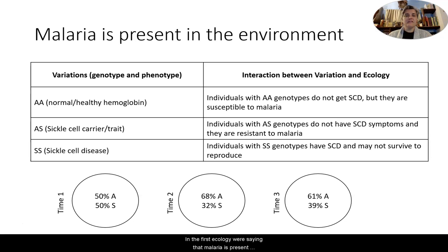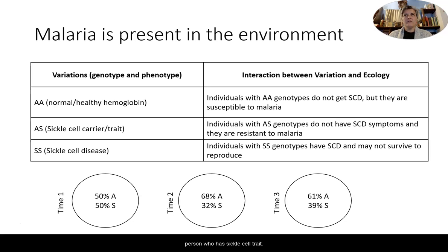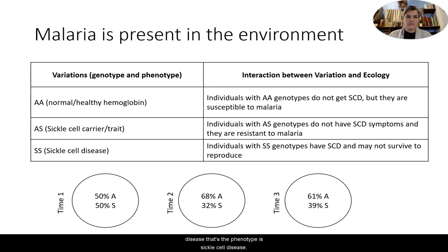In the first ecology, malaria is present in the environment. There are three variations. The first is the AA genotype, and the phenotype is normal healthy hemoglobin. The person with the AS genotype has sickle cell trait — they carry the S allele and may not necessarily have symptoms unless there is a low oxygen situation, such as higher elevations or heavy exercise. Finally, the third variation is SS — the SS genotype is the person who has sickle cell disease as their phenotype.